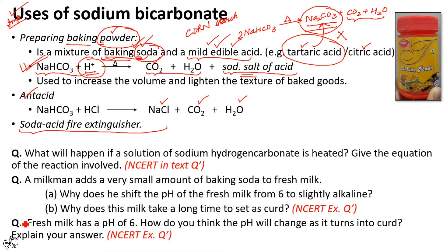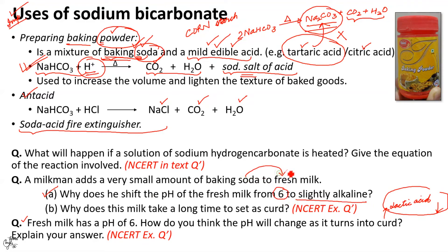Fresh milk has a pH of 6. How will the pH change as it turns into curd? Curd contains lactic acid. As milk turns into curd, more of this acid is produced and hence the pH would decrease. Now it will be easy to answer the previous question. As the pH of milk decreases, it would start curdling. The milkman shifts the pH from 6 to slightly alkaline by adding baking soda to fresh milk so that curdling is delayed. Baking soda, being a base, would neutralize the effect of lactic acid present in the milk and hence prevent the milk from souring readily. This milk, being alkaline in nature, tends to take longer time to set as curd because the Lactobacillus bacteria takes longer to produce lactic acid, which is responsible for decreasing the pH and initiating curd formation.